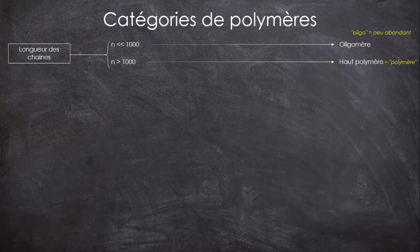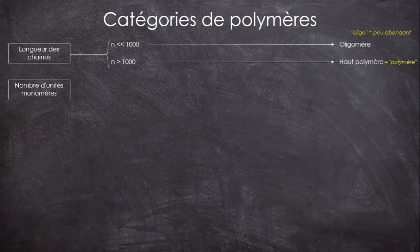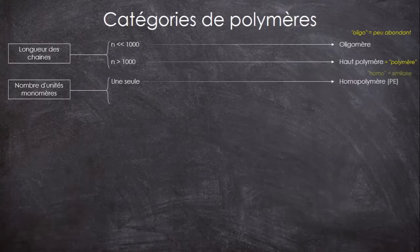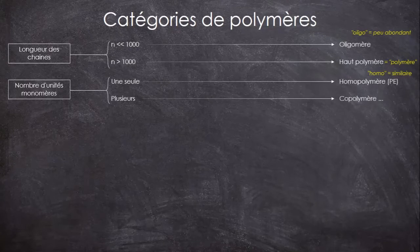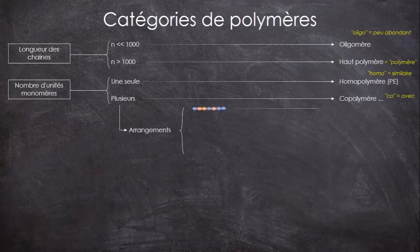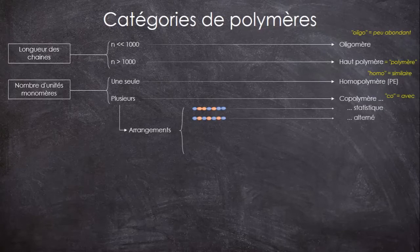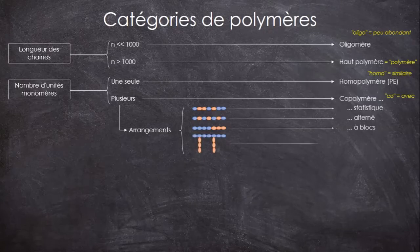En plus de la longueur des chaînes, on peut considérer le nombre d'unités monomères différentes qu'on va retrouver dans les chaînes. Quand il n'y en a qu'une seule, comme pour le polyéthylène qui n'est fait qu'avec de l'éthylène, on va parler d'homo-polymères. S'il y en a plusieurs, comme pour l'ABS ou les élastomères thermoplastiques, et que chacun peut servir à fabriquer un homo-polymère si on l'isole, on parlera de copolymères. Selon leur arrangement, on les dira statistiques si les différents motifs s'arrangent de façon aléatoire, alternés si on a une alternance des motifs élémentaires, à blocs s'il y a une séparation totale, et greffés s'ils forment des sortes de branches.